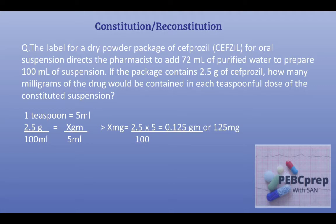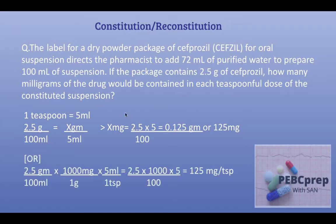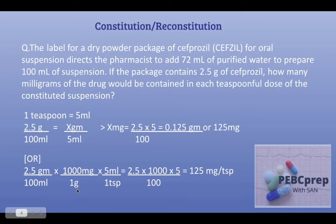Up to this point we solved the question in the conventional way. But in an exam, to save time, try using dimensional analysis: if 2.5 grams are in 100 ml, and we want our answer in milligrams (1 gram = 1000 mg), and one teaspoonful = 5 ml, we combine all these together and get 125 milligrams per teaspoonful. This is called dimensional analysis — the quick way to solve questions in exams.